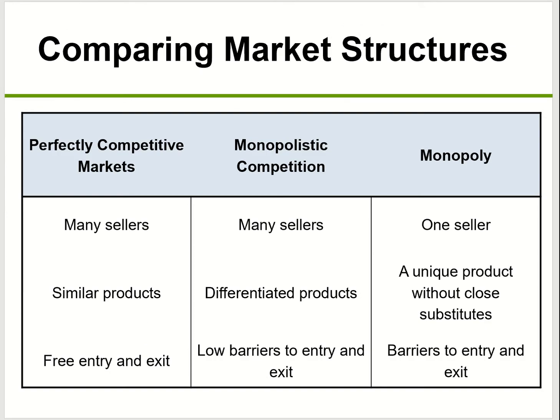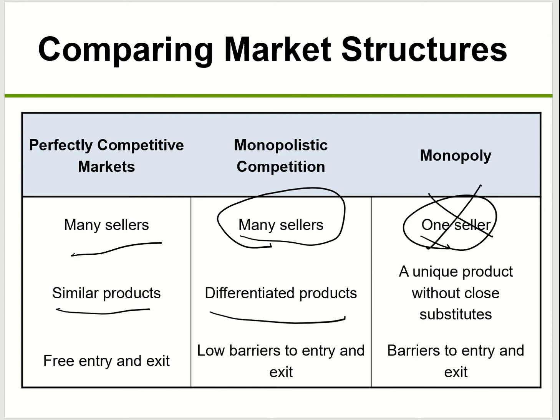Here is a comparison between the three market structures. Under perfect competition, you have many buyers and many sellers — same thing for monopolistic competition. But in perfect competition they sell similar products, while monopolistic competition has differentiated products. For monopoly, there's only one seller, and they sell a unique product with no close substitutes.